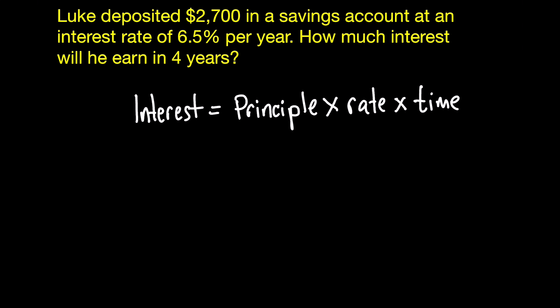All you have to do now is take that data from the question and plug it into this equation. They're telling us that the principal, or the amount that he deposited, was $2,700. And then they're telling us that the interest rate is 6.5%.